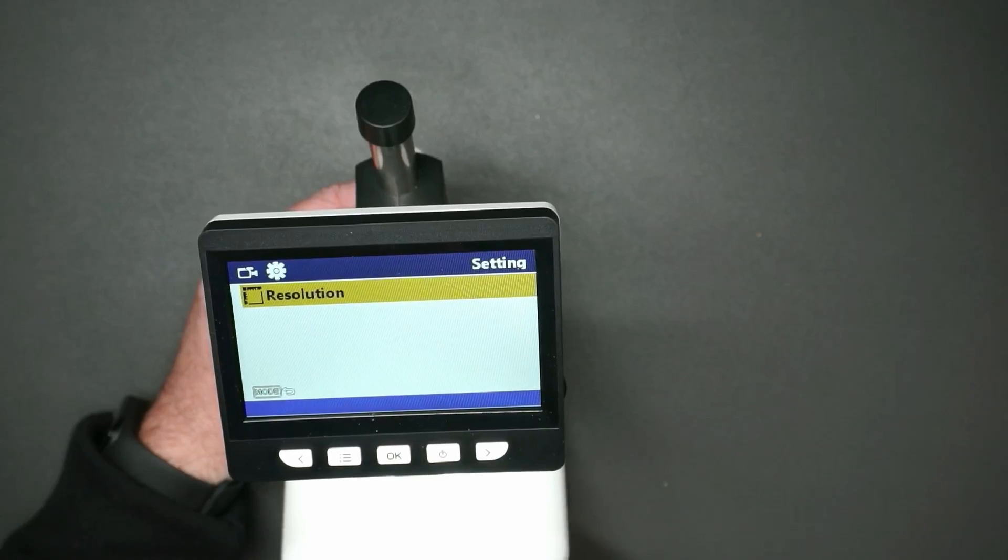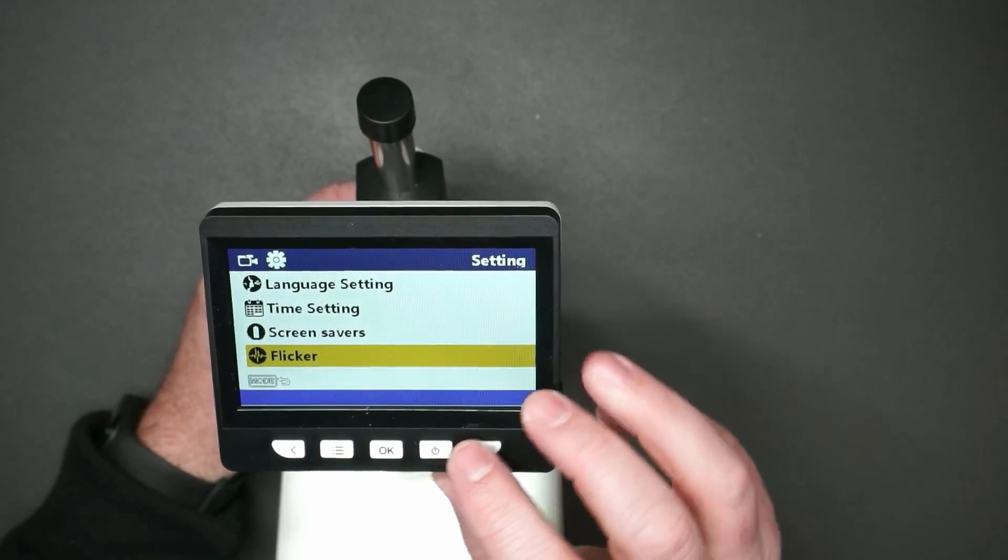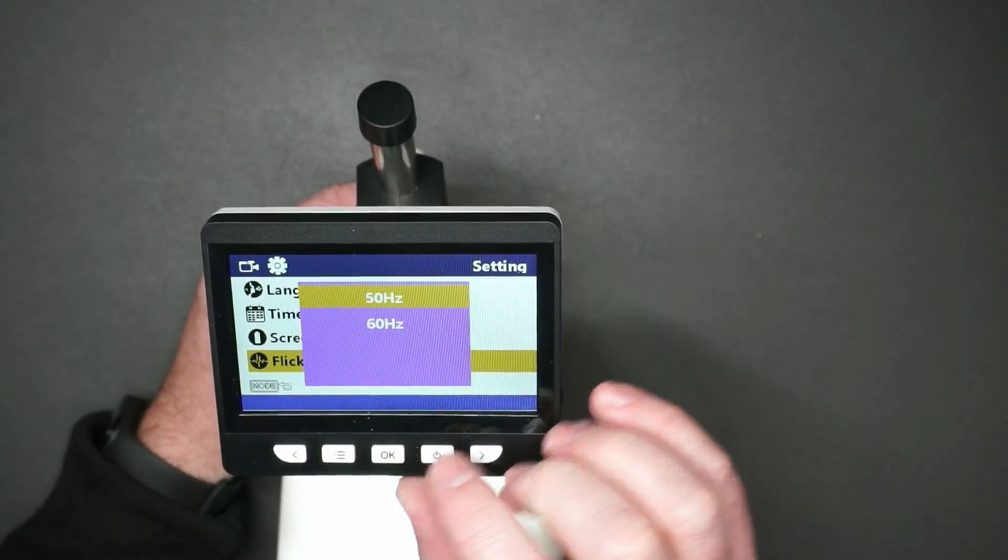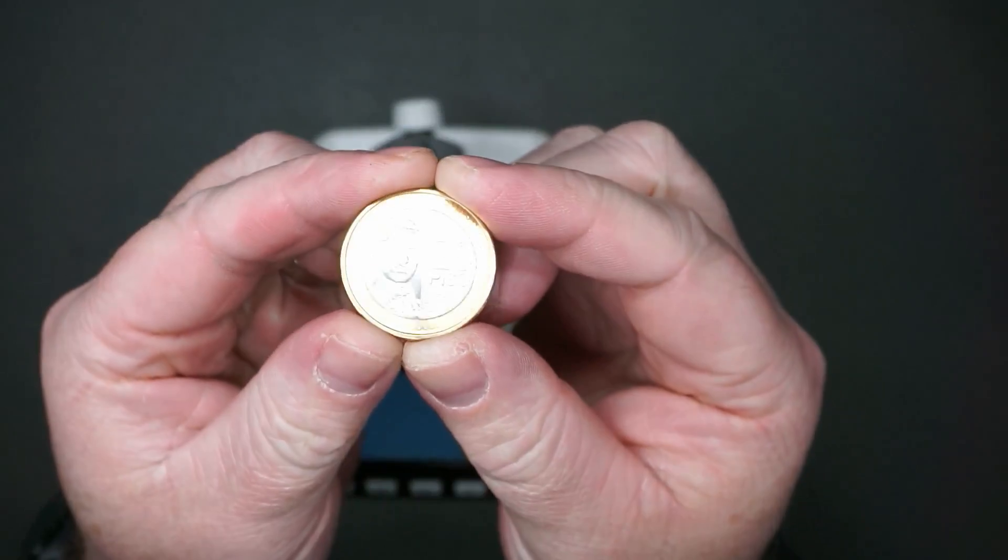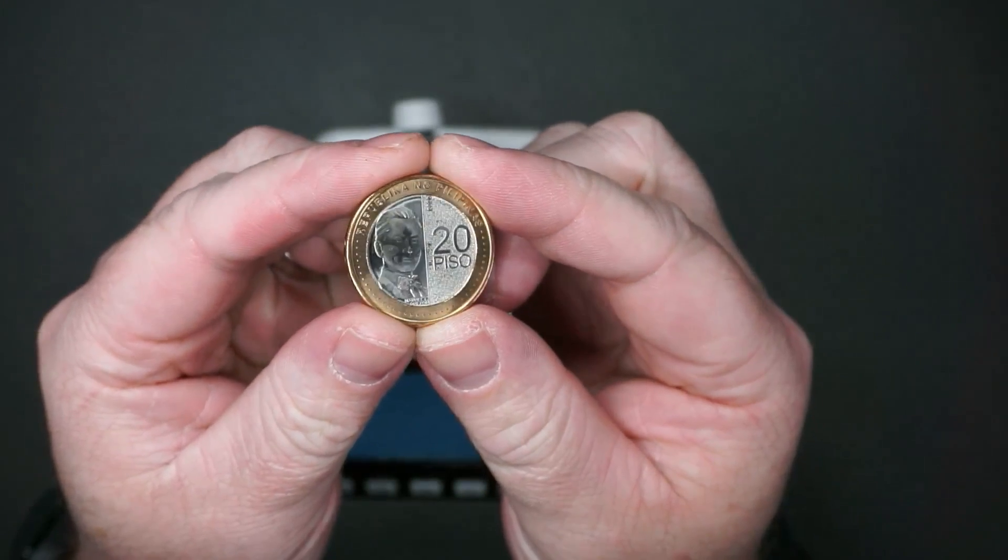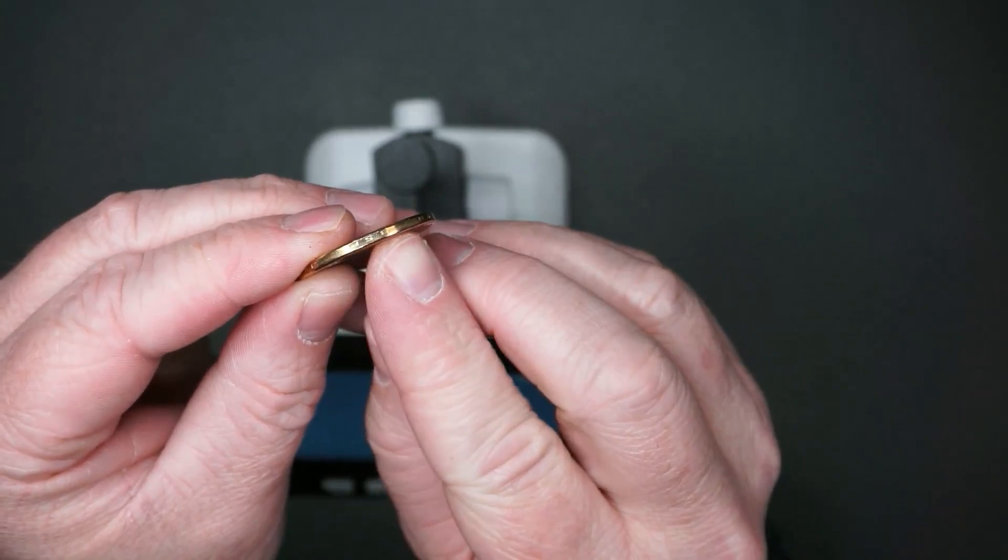In the menu you can decide on the resolution you want, I'll keep it at 1080p. You can also change the language, time, screen saver, and flicker. Let's make sure that this is on 60 hertz. We can format the SD card if we need to. Let's have a look at this Filipino peso, this is 20 pesos, nice looking coin.